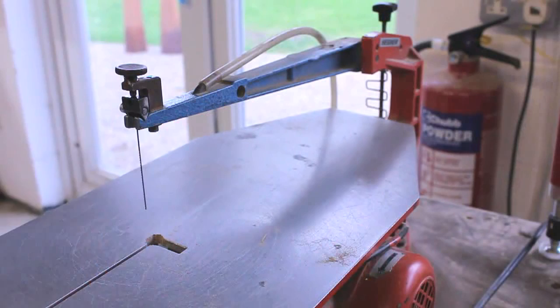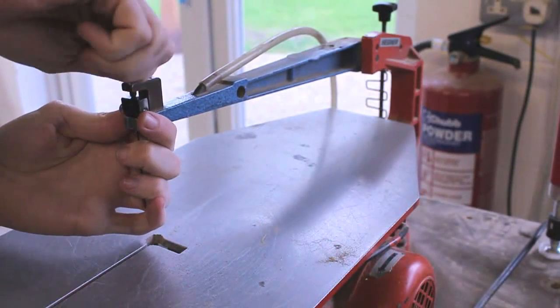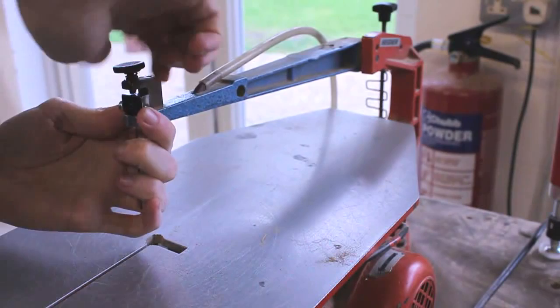With the arm loosened you can now remove the front block. Do this by loosening the screw and then remove the part which holds the blade in place.